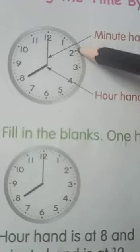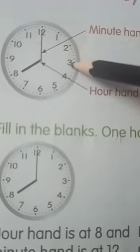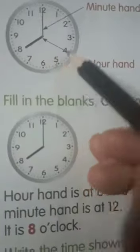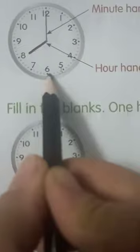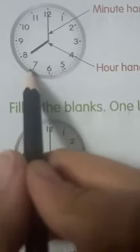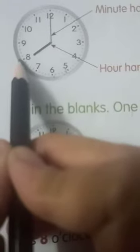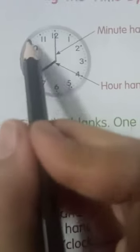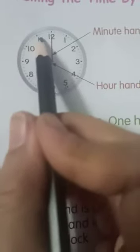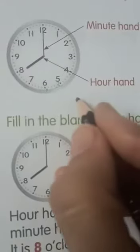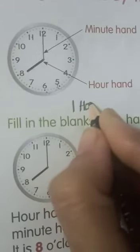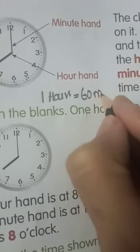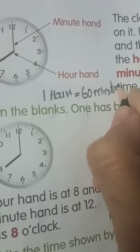Similarly, 5 plus 5 is 10. 10 plus 5 is 15. 15 plus 5 is 20. 20 plus 5 is 25. 25 plus 5 is 30. 30 plus 5 is 35. 35 plus 5 is 40. And 40 plus 5 is 45. 45 plus 5 is 50. 50 plus 5 is 55. Again, 55 plus 5 is 60. So, 1 hour, H-O-U-R, 1 hour is equals to 60 minutes. Minutes, M-I-N-U-T-E-S, minutes.